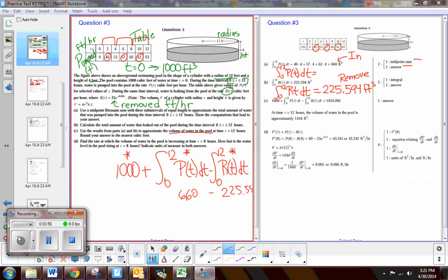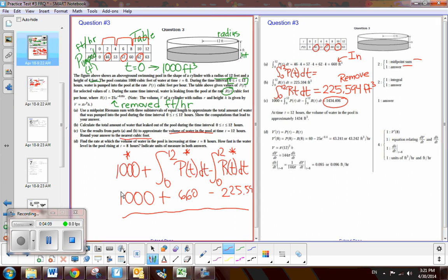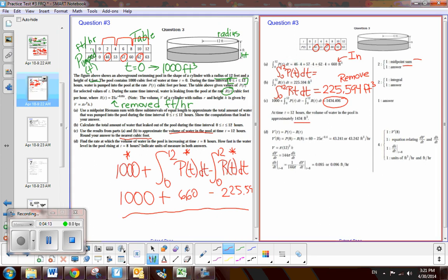So you can see when we evaluate this expression, we end up with 1434.406. Now, make sure you read the directions real quick, because it said round to the nearest foot. So then the nearest foot would be 1,434 feet cubed. Now, this is only worth one point. So we've earned five, so we've got four more to go.